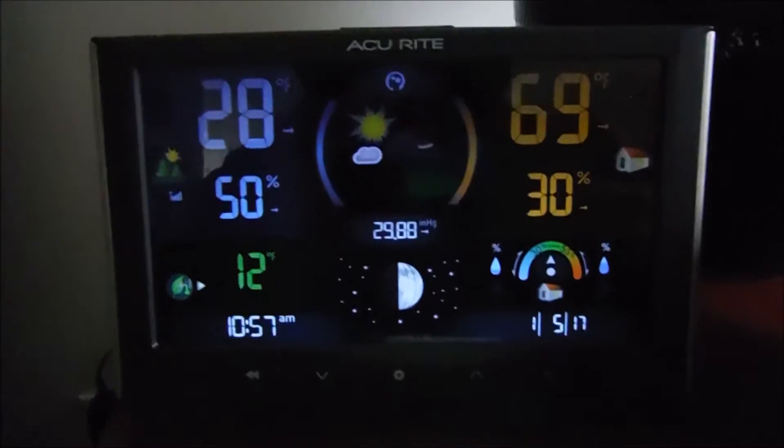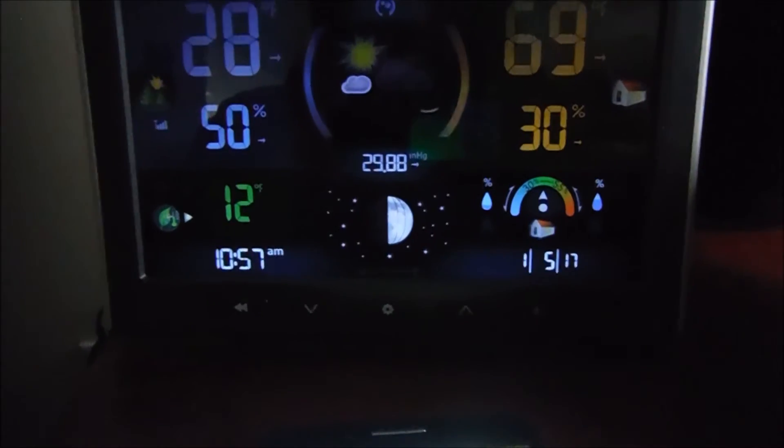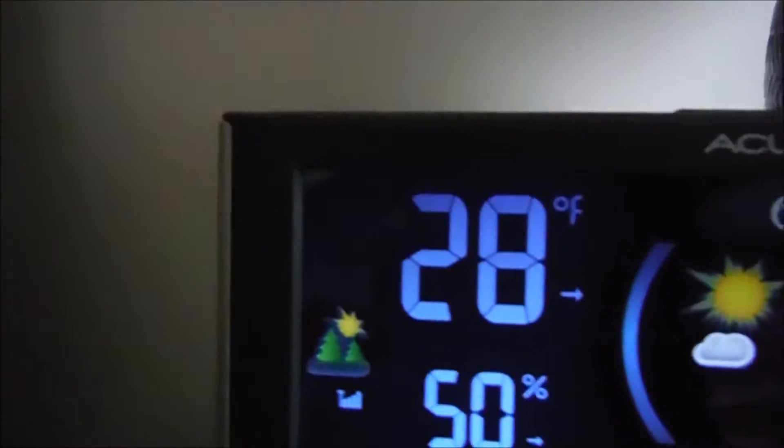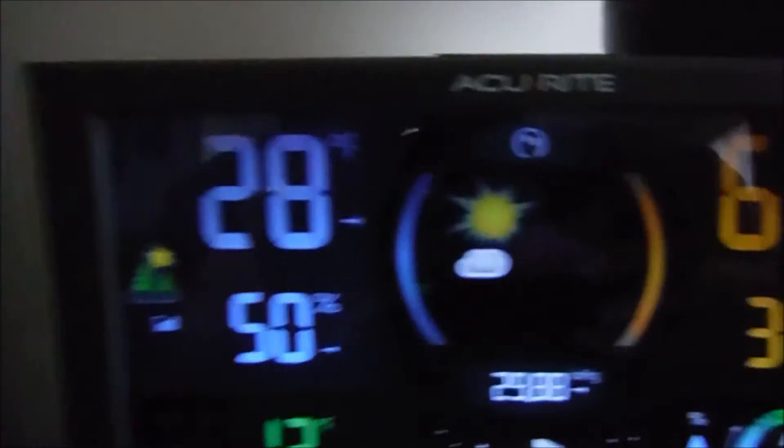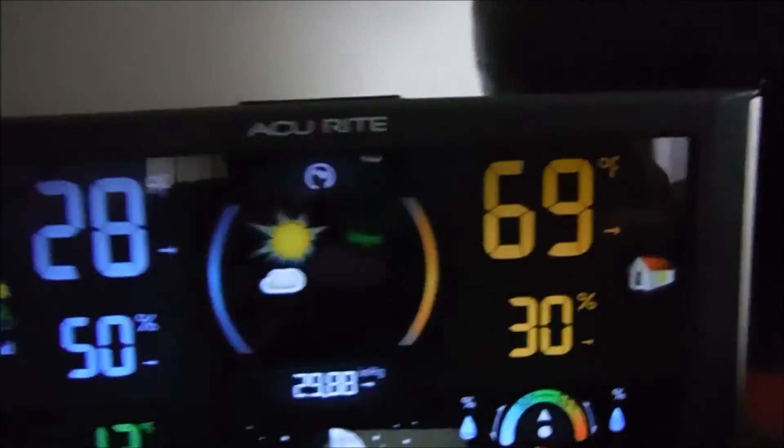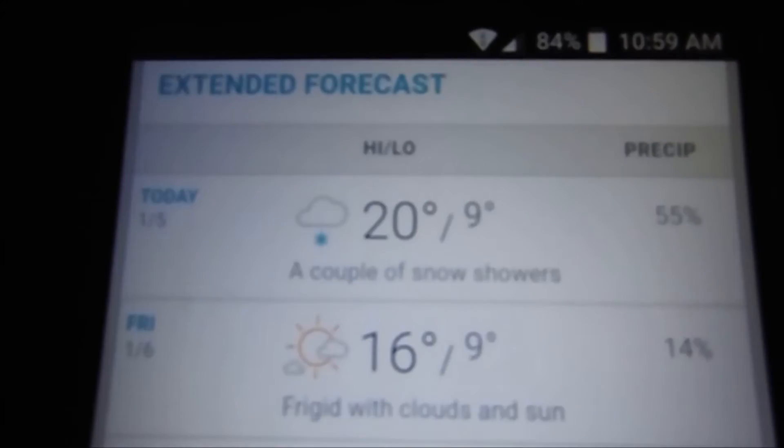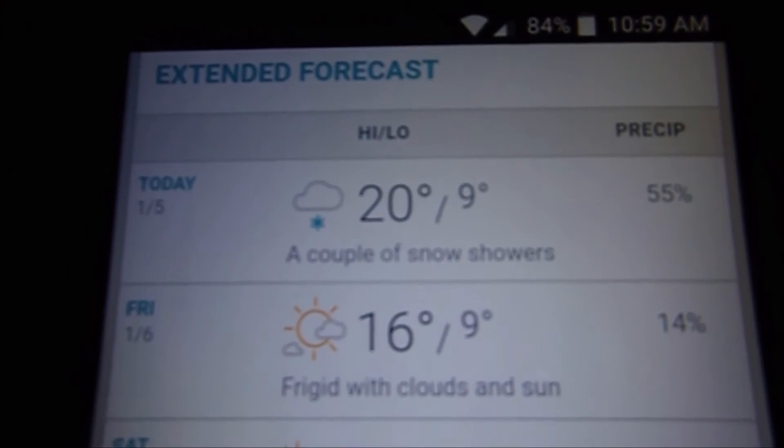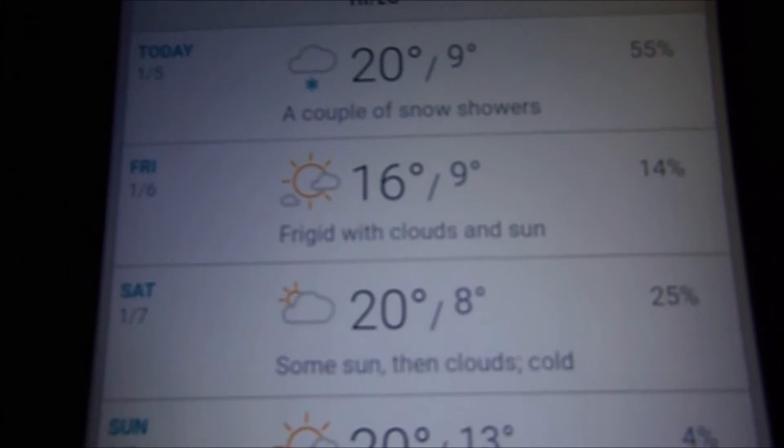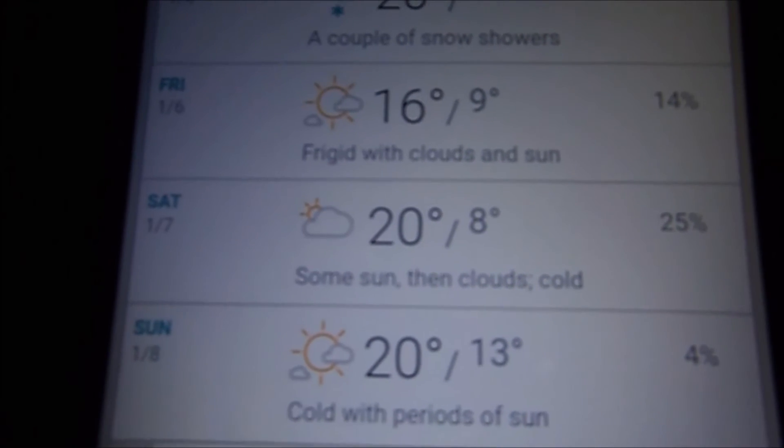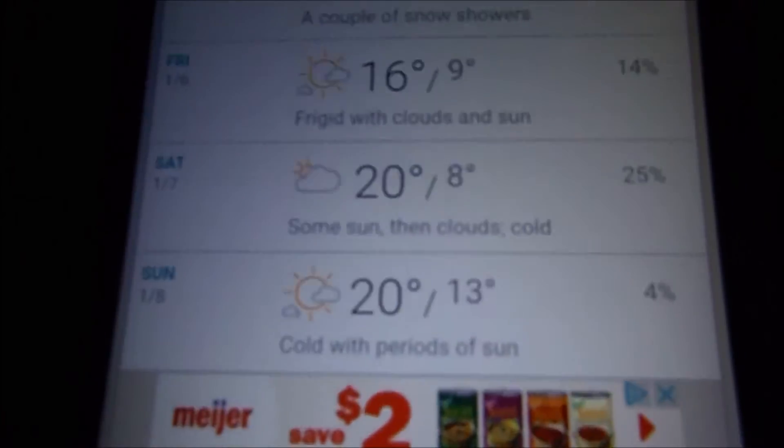So I had this little weather station. It's 28 degrees in my garage, that's below freezing, 32 is freezing, 69 in the house. I don't know if you can see this. Here is the forecast for the week, today, 20 degrees, a high 20, tomorrow, 16, 20, 20. Look at those lows.